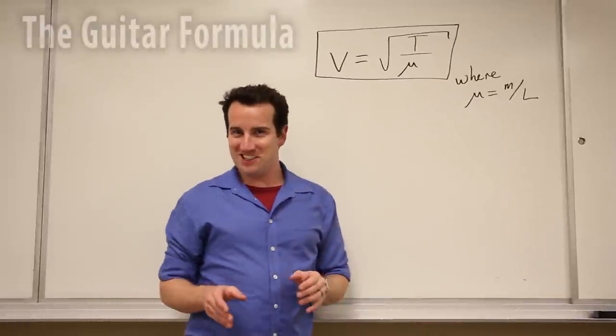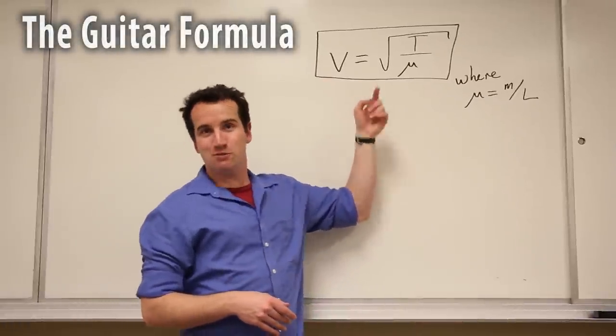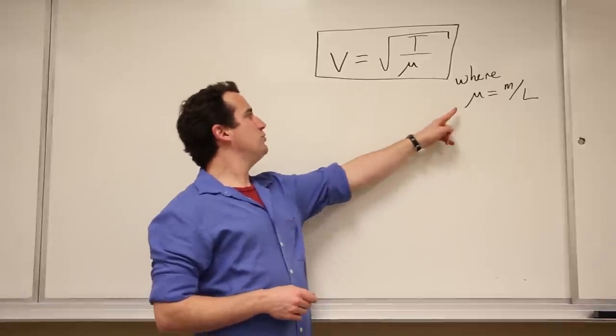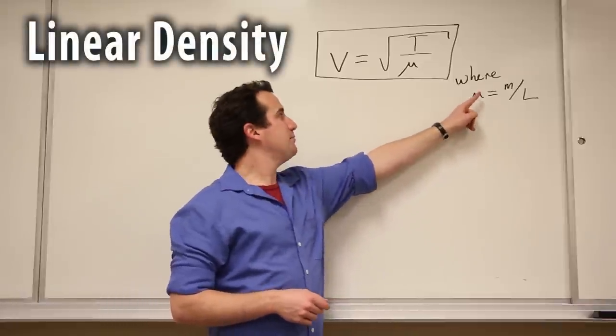The guitar formula. The velocity of the wave on the string equals the square root of the tension divided by mu, where mu is linear density, mass per unit length.